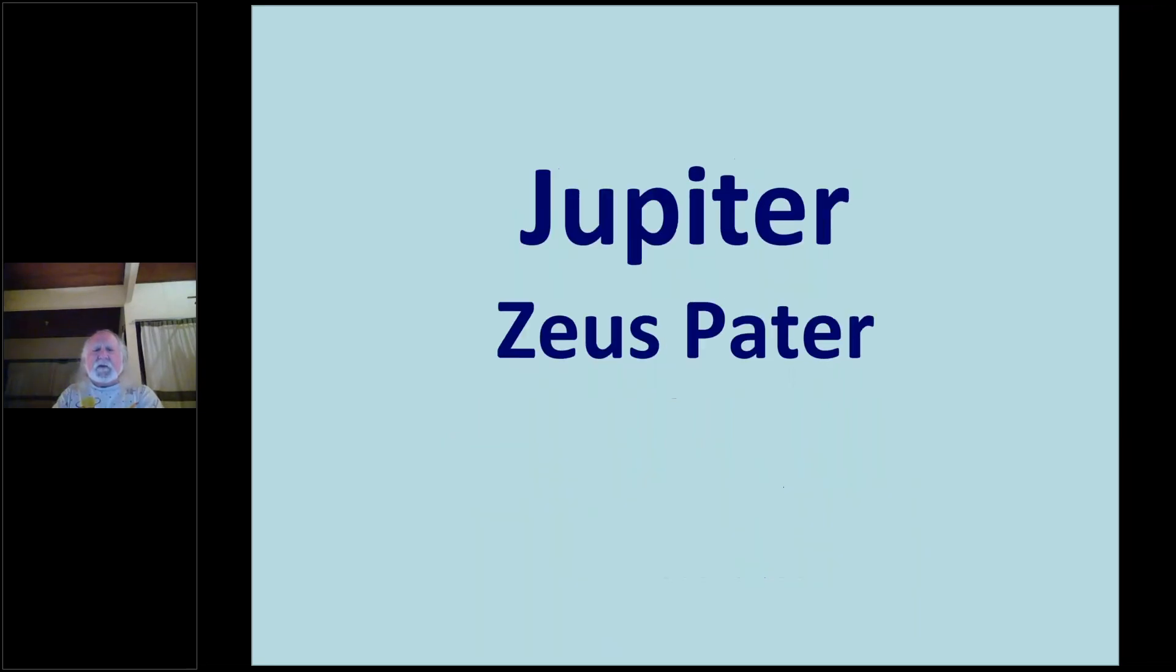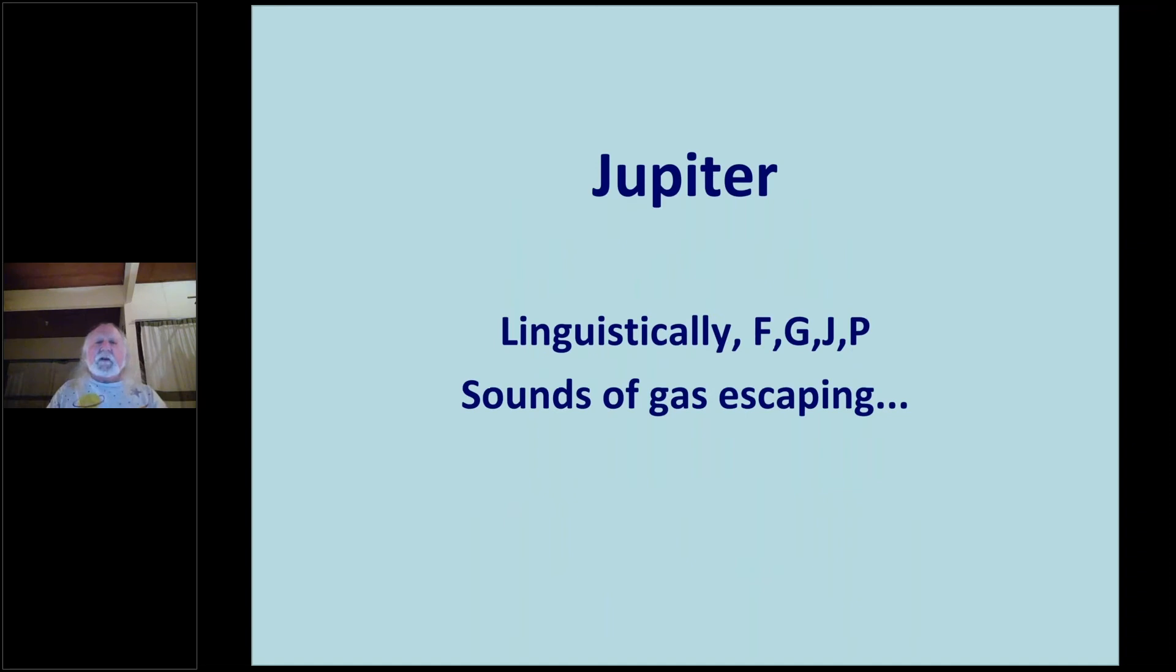Jupiter, Zeus-pater, father sky. Linguistically, Jupiter in the Romantic English, Greek, Aramaic, Indo-European languages, the sounds of gas escaping, b, g, f, these are all p, pop, big, baby, buoyant, jolly, beneficent, bountiful. Even the word Jupiter, these are all linguistically Jupiterian. And you can almost hear Jupiter when you go, it's the sounds of gas escaping, popping, exploding, balloon. Jupiter is bringing things to a point where it can't expand any farther. And the reason why it can't expand any farther is it bumps into Saturn.